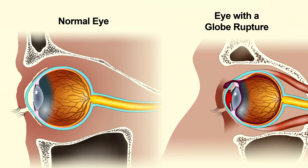Some of the more interesting cases involve globe ruptures, where the eye is actually blown up — it's lost its integrity. One case in particular involved an individual that was working at a construction site.